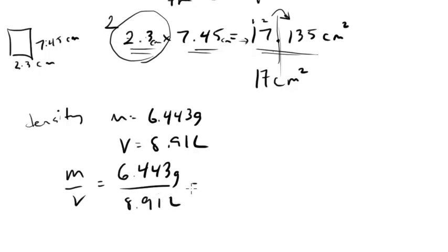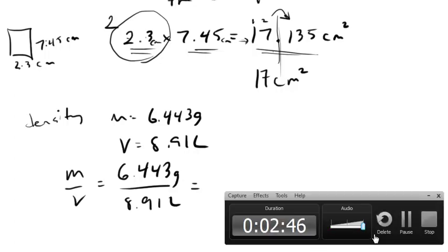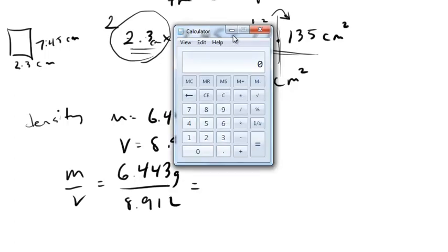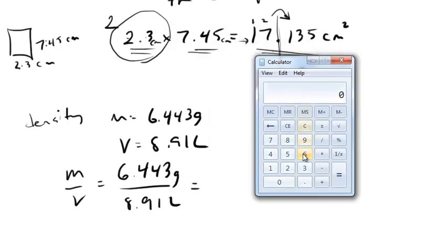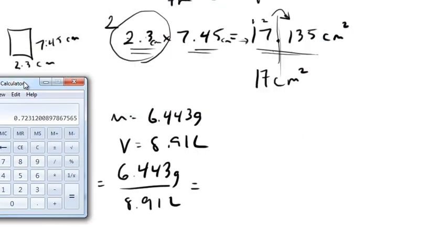So we would divide these out. We would get some large number, which I have to look up, hold on one second. Okay, I'm back. I was just going to pull up the calculator for a second. So we're going to do 6.443 divided by 8.91. This is going to get us, oh my goodness, a massive ugly number.